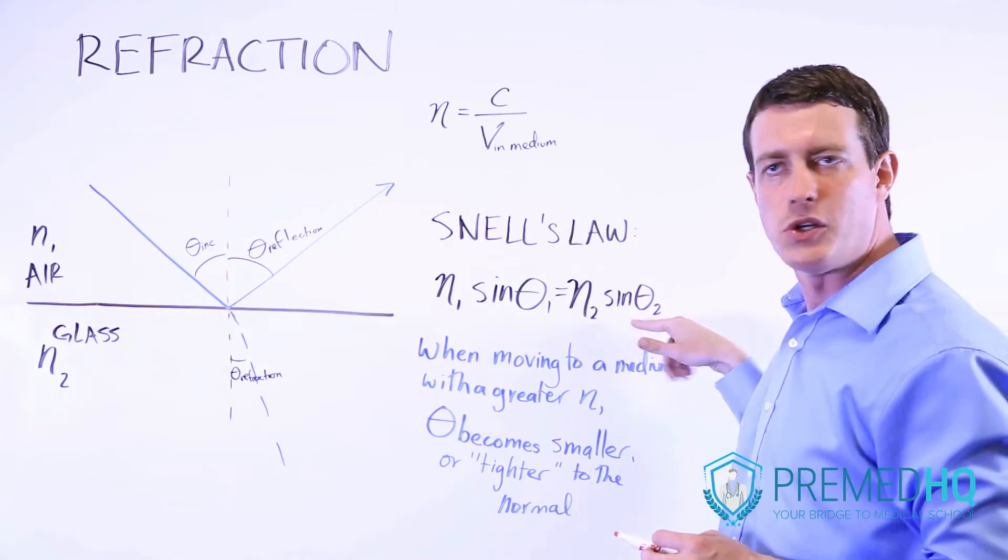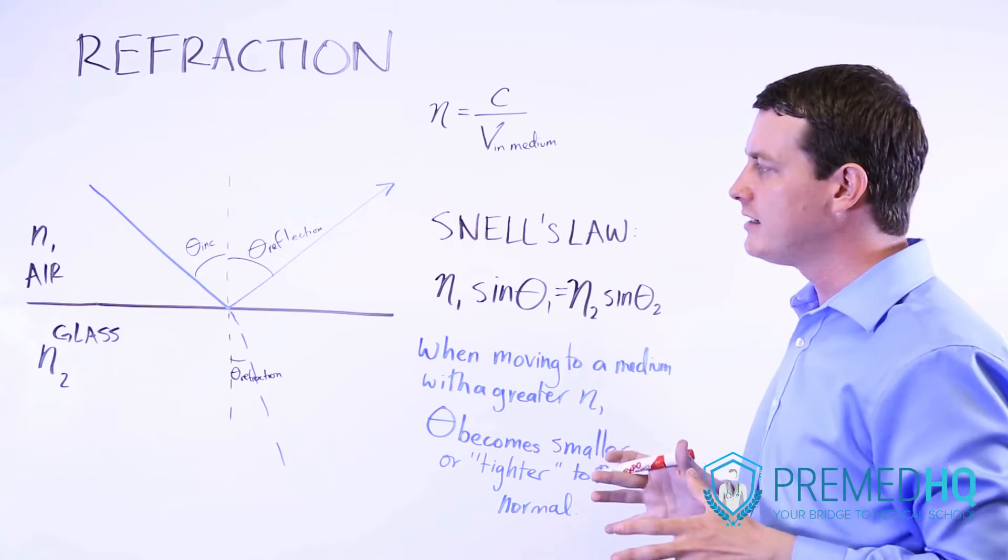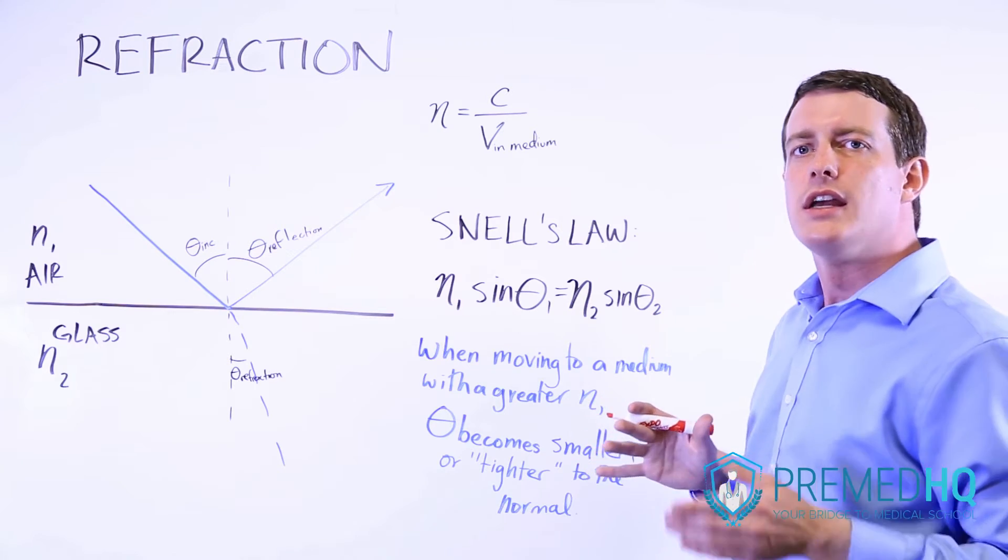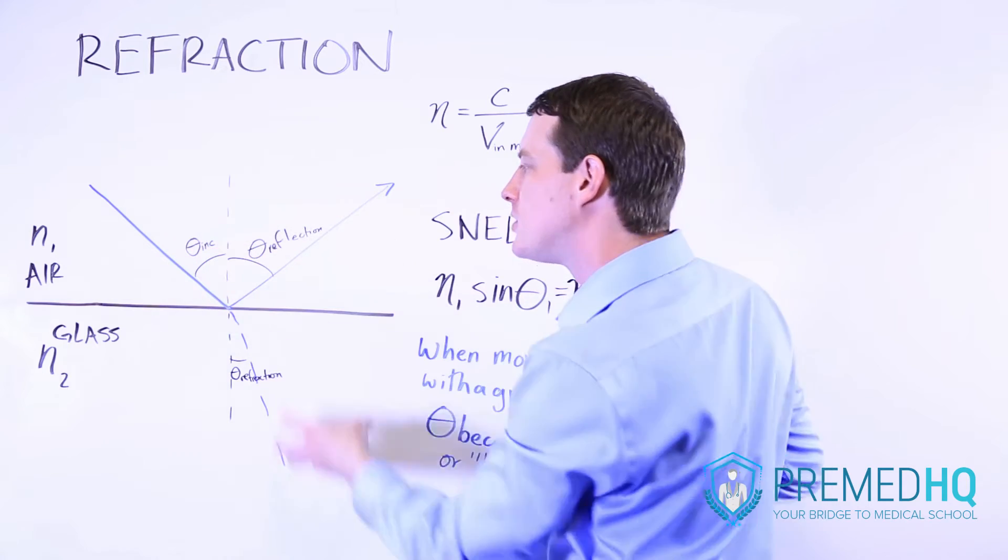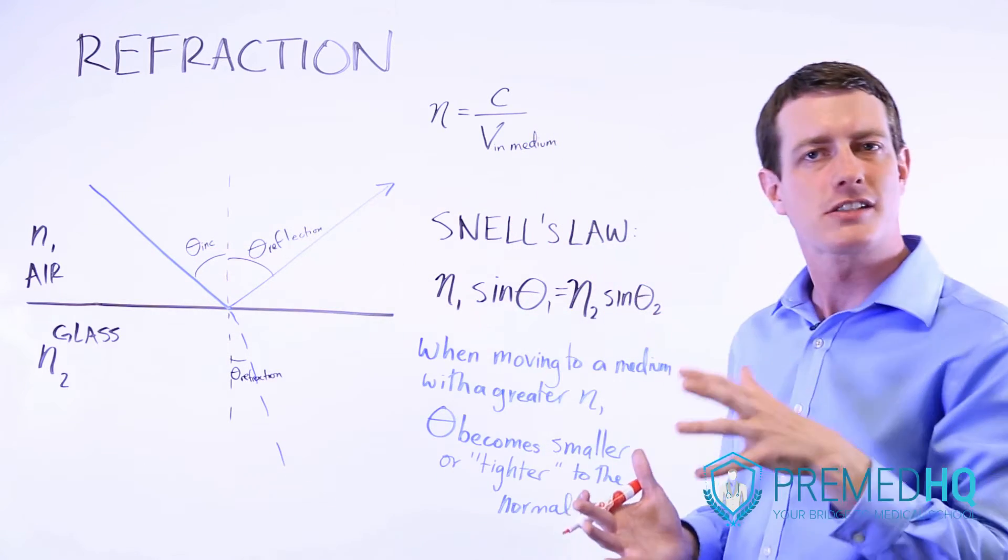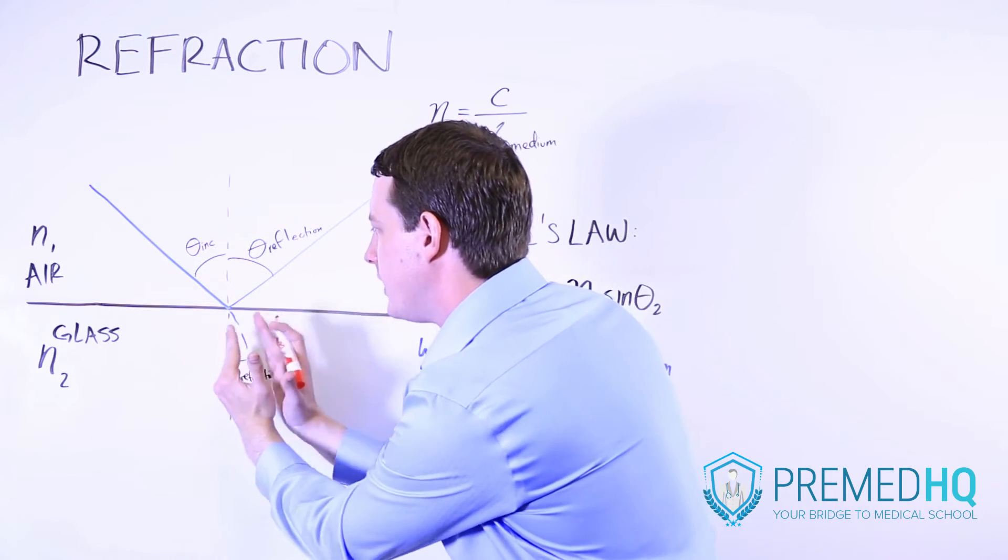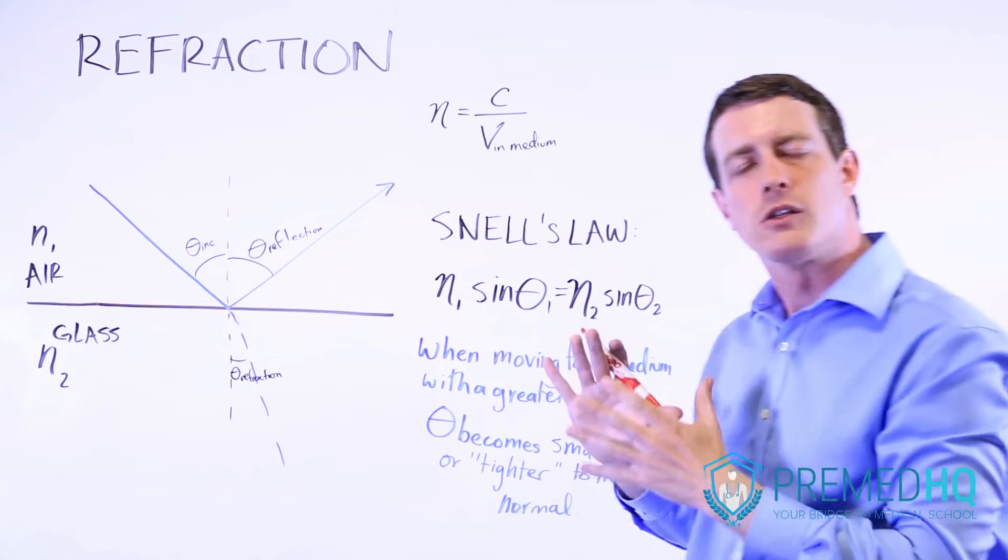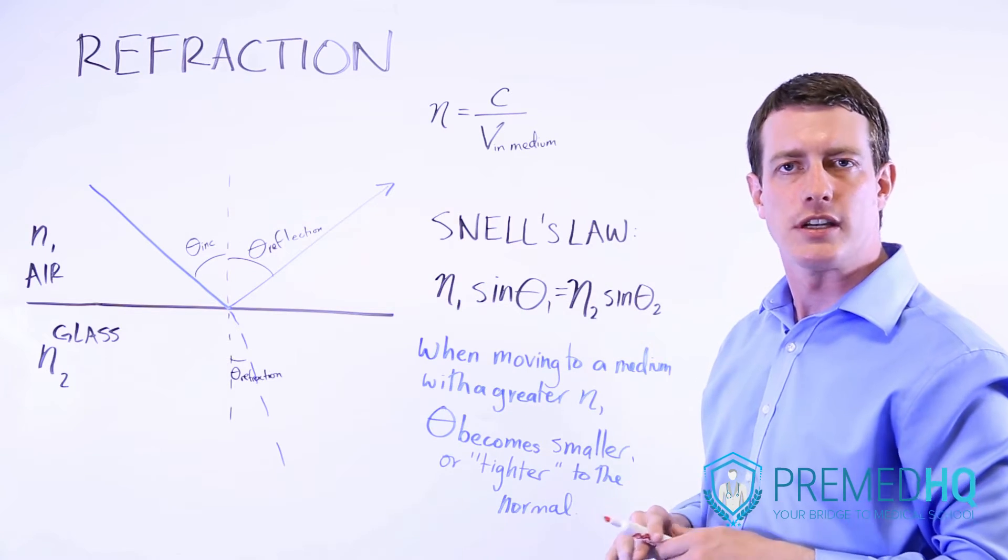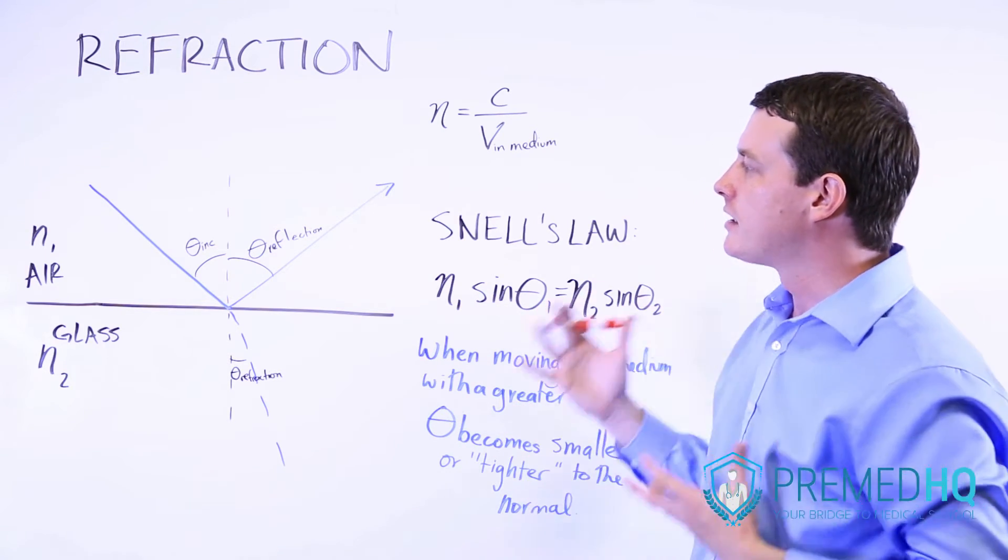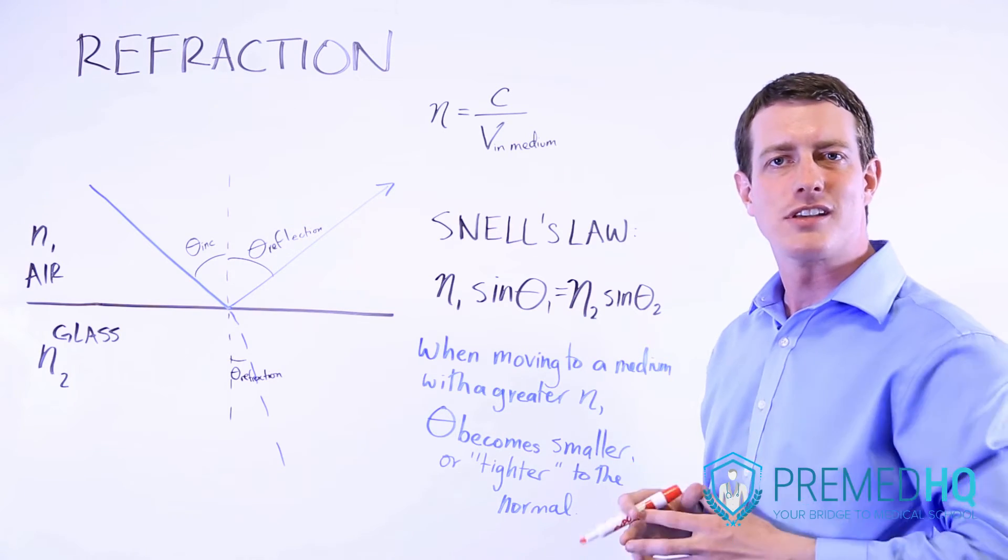Now one thing to keep in mind, and just be aware of to make this a lot more intuitive, is to realize that whenever light goes from one medium to another, and the second medium has a greater index of refraction, theta will always get smaller. So the angle will move in a way that makes it tighter, makes it closer to that normal vector. And those are the very important things to be aware of with refraction. And then we'll get into a discussion of some of the interesting components of what's going on with these changes in velocity and various other angles involved.